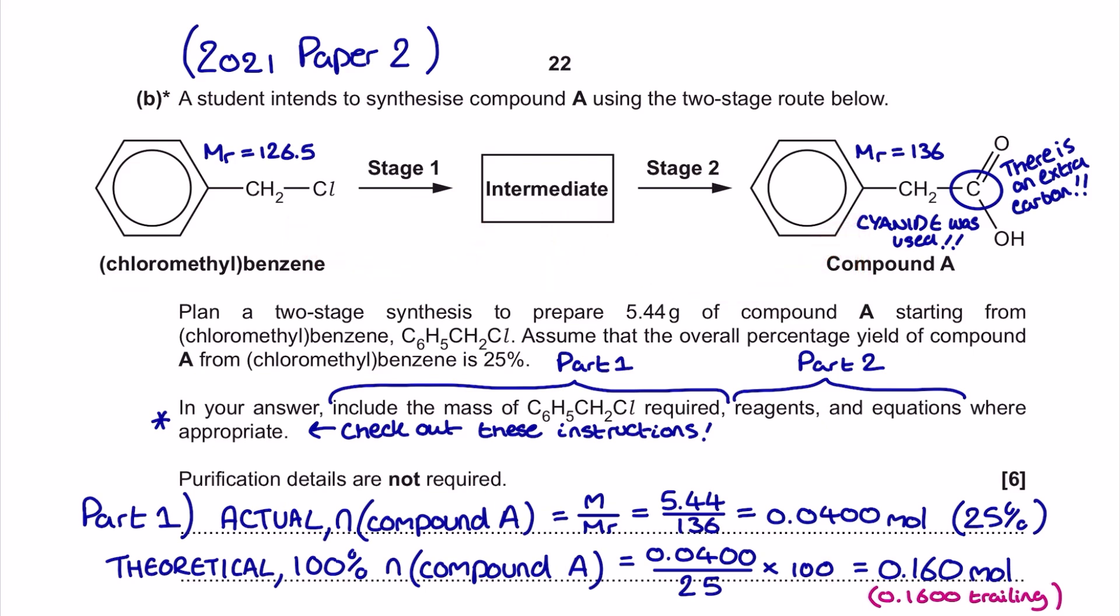Further information in the question says that we need to assume that the overall percentage yield of compound A from the chloromethyl benzene is 25 percent. So that means we're losing 75 percent of the moles of the chloromethyl benzene that are being incorporated into this procedure to try and produce compound A.